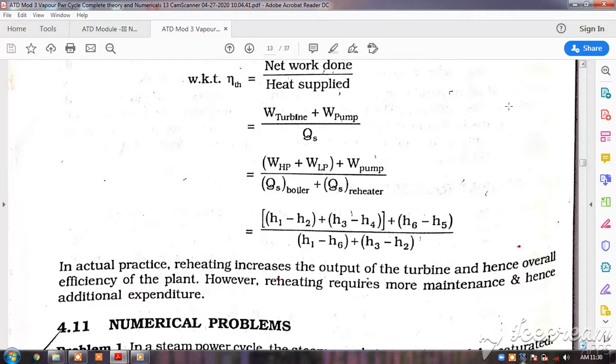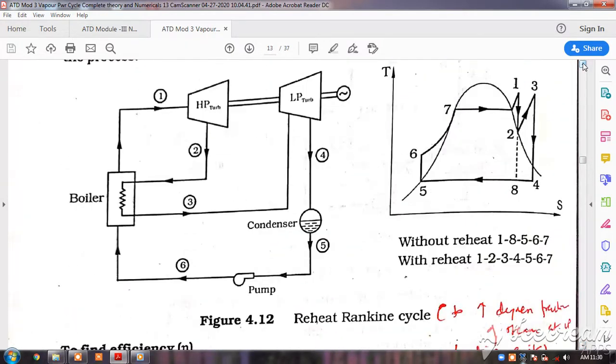Reheating is done, and you can see in earlier discussions we had only one turbine, but now we have two turbines: first a high pressure turbine and second a low pressure turbine. From the high pressure turbine the steam is exhausted, goes to the boiler, is heated, and comes to the low pressure turbine. The outlet from the low pressure turbine at condition 4 is more dry than the outlet from the high pressure turbine which could have been at 8. This is the idea to improve the thermal efficiency of the Rankine cycle.